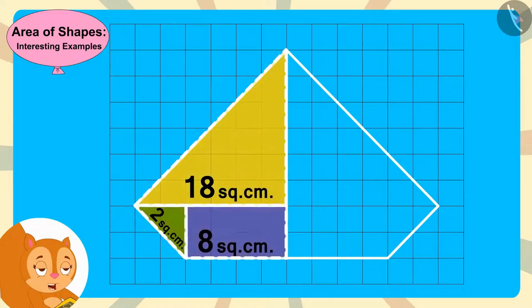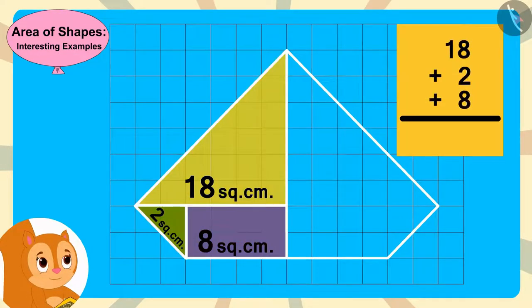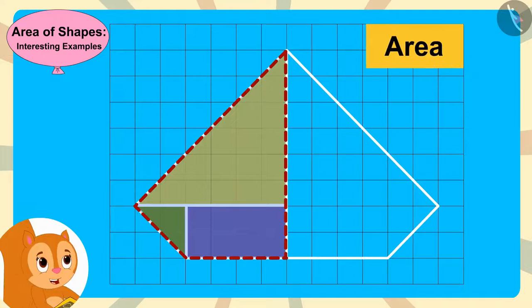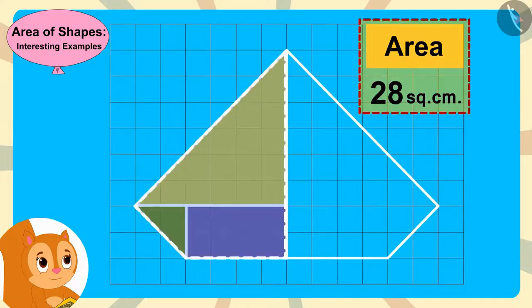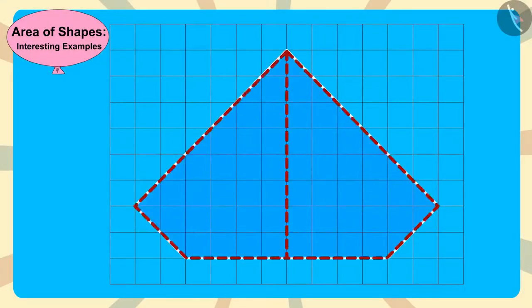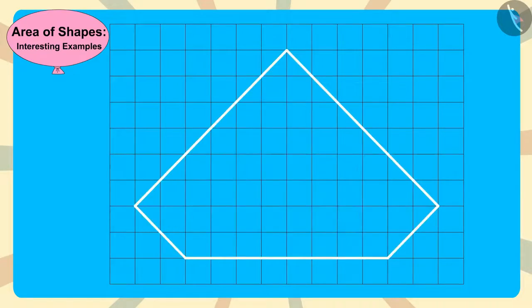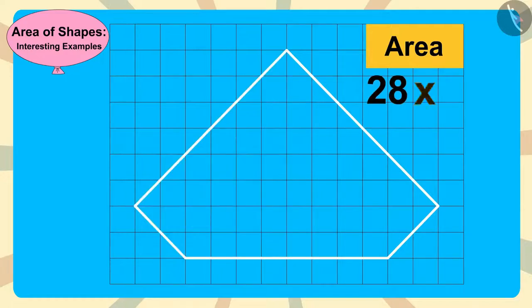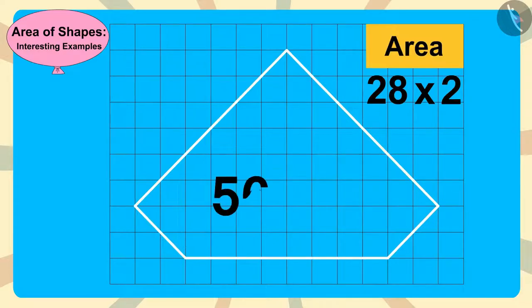By adding the area of all these shapes, Chanda found the area of this part of the diamond to be 28 square centimeters. Because the diamond is made of two equal parts, she multiplied 28 by 2. The area of this diamond is 28 into 2, which is 56 square centimeters.